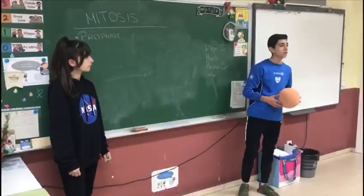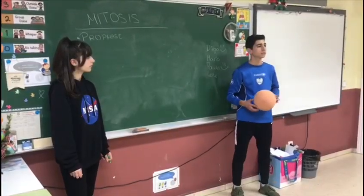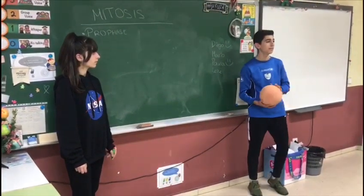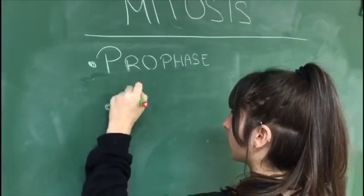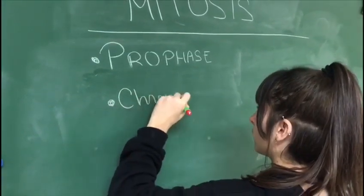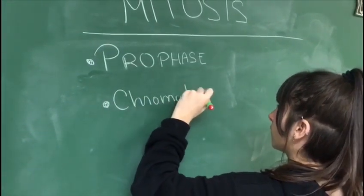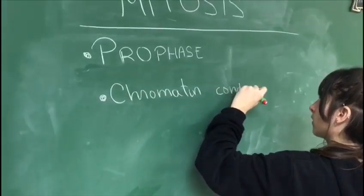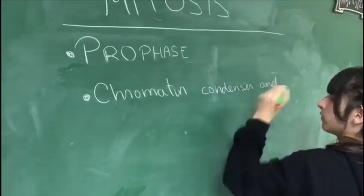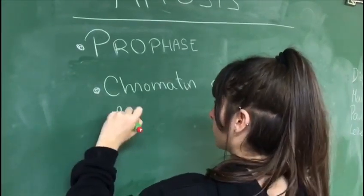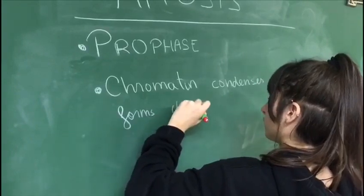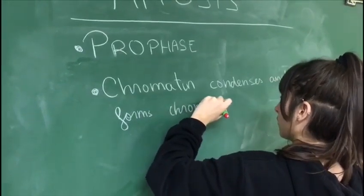How do we know all the names of the phases of mitosis? Mario, explain the first one. The chromatin condenses and forms chromosomes. Then the nuclear membrane disappears, and finally the centrioles move to the poles.